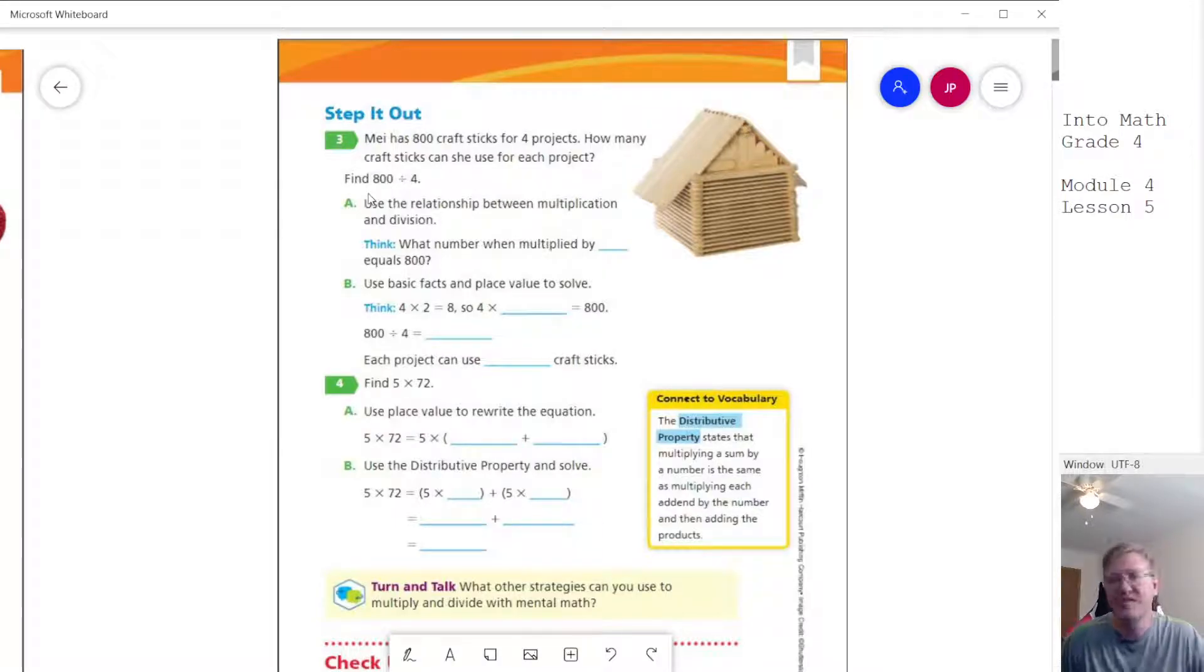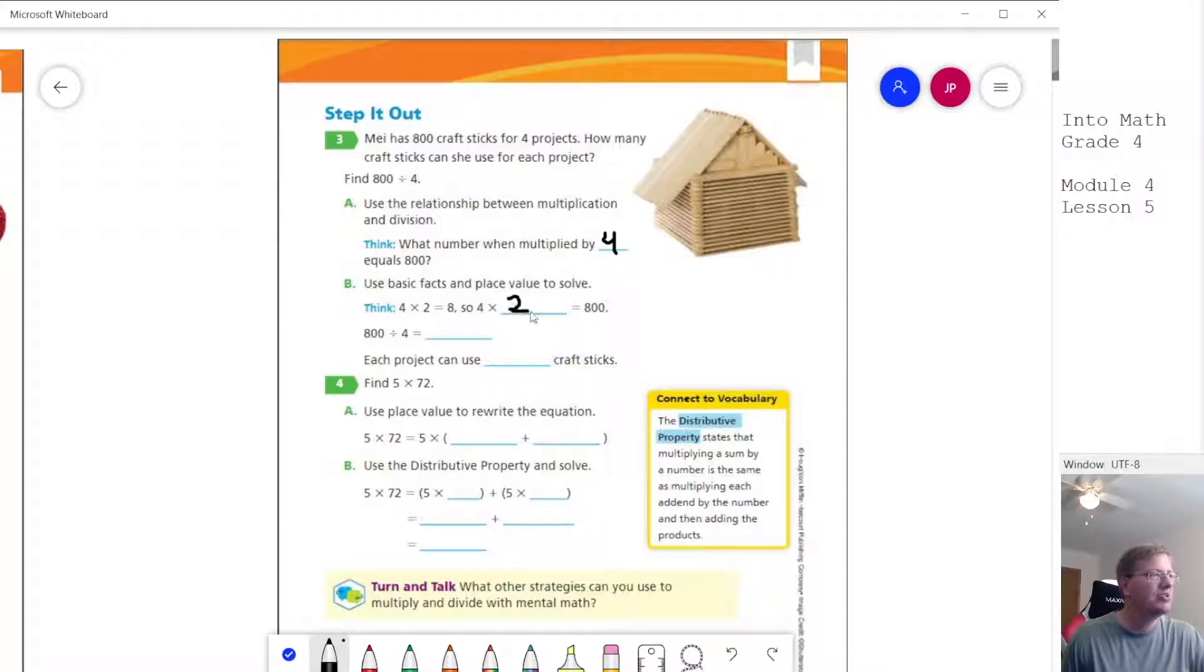Again, we're going to do the same kind of idea for this one. So we're doing 800 divided by four. What number when multiplied by four equals 800? So we want to figure out what number multiplied by four equals 800. So our basic math fact, four times two equals eight. So we would use the number 200 to get to 800.